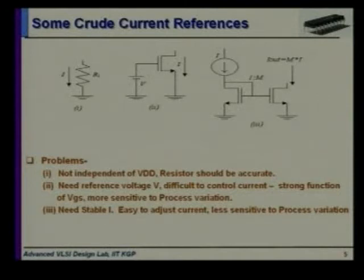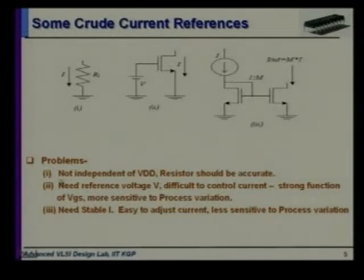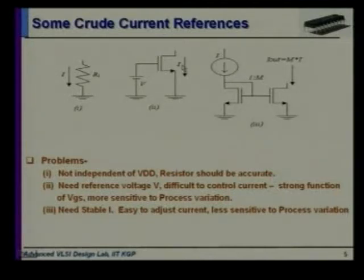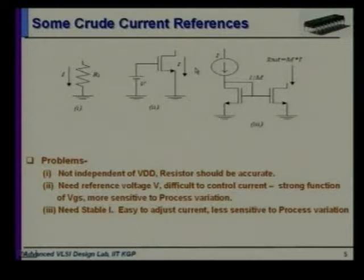There are some crude current references. You can see: VDD through a resistor R — whatever current flows will be VDD divided by R. But this is not independent of VDD; if VDD changes, then I also changes. The second one uses a MOSFET biased with a bias voltage. The current through the MOSFET depends on VGS and the W/L ratio of the MOSFET.